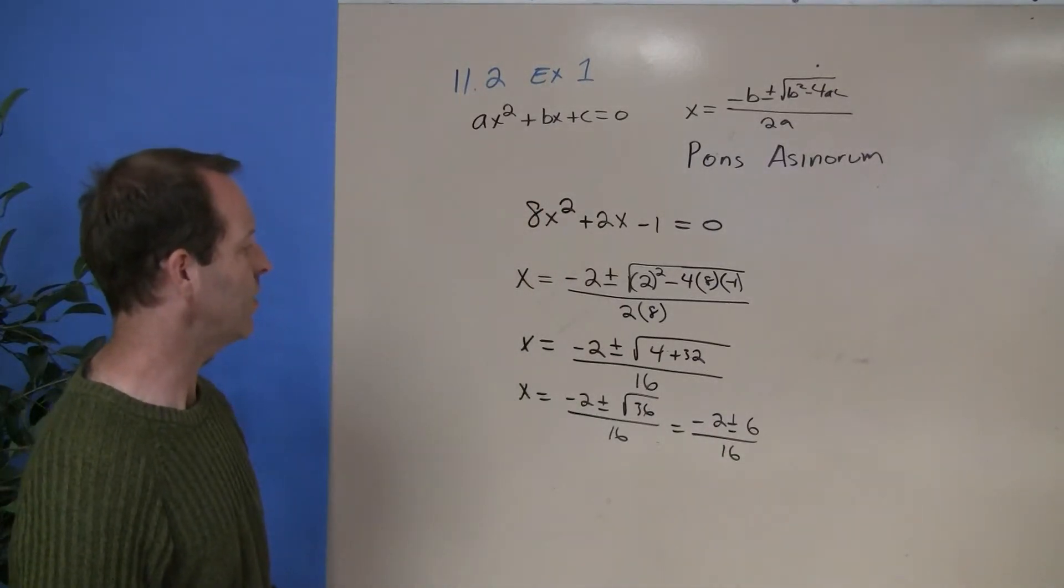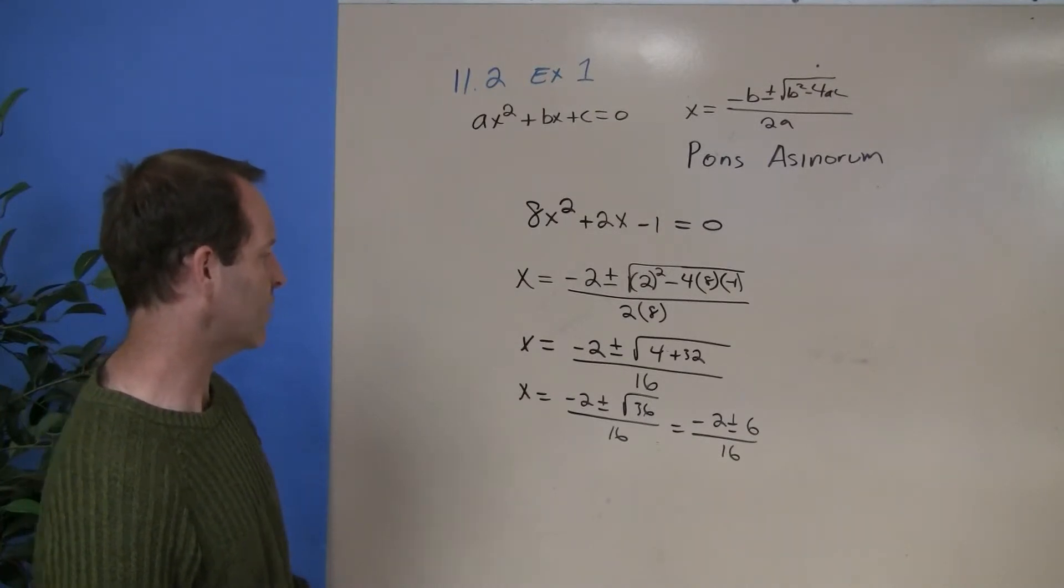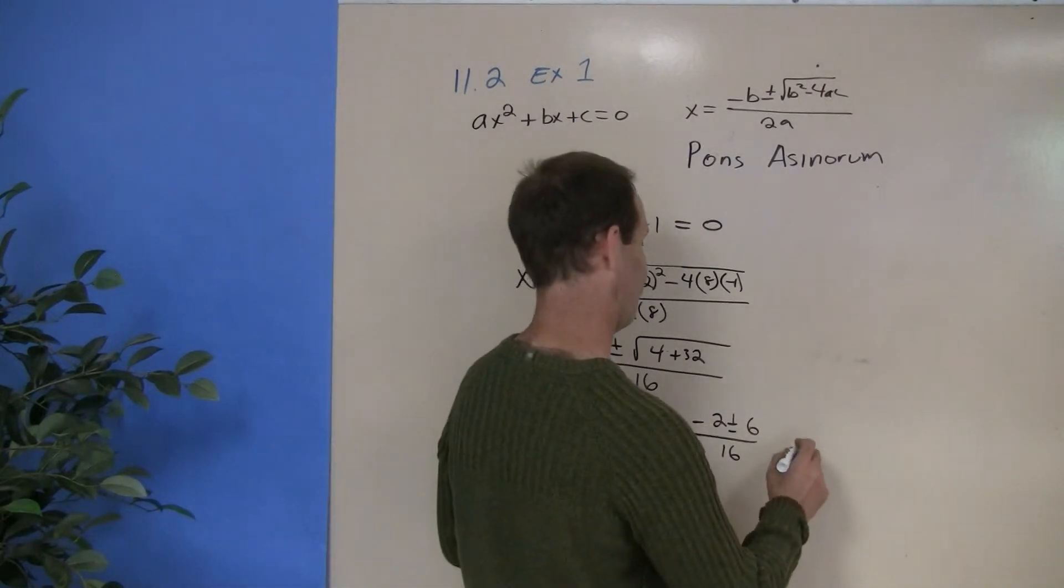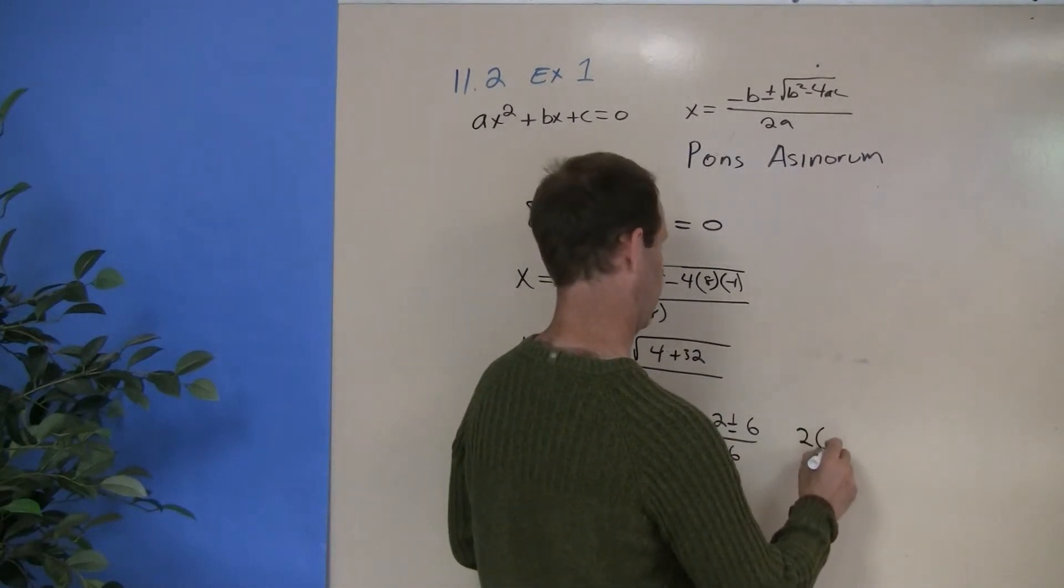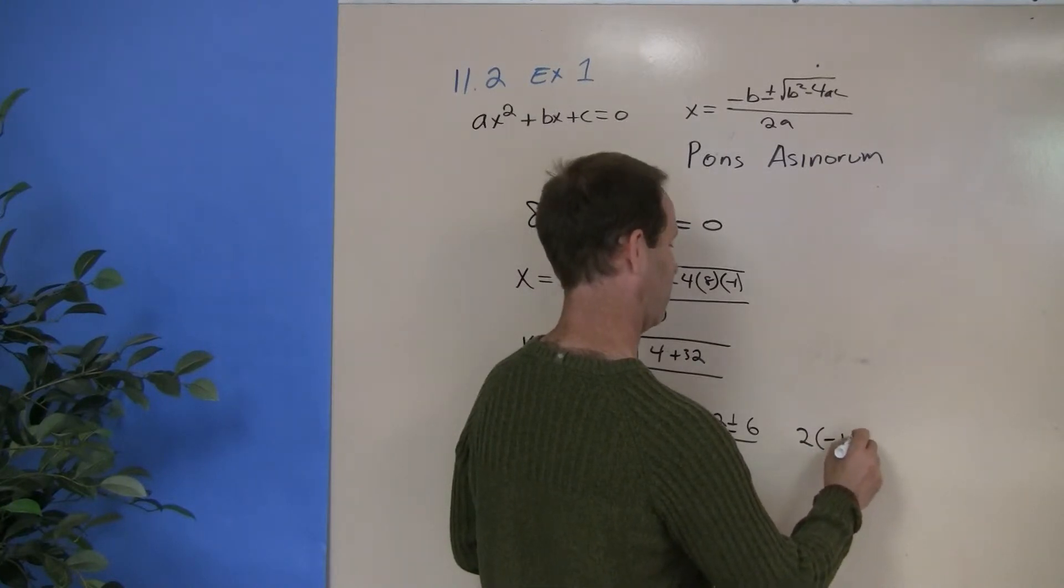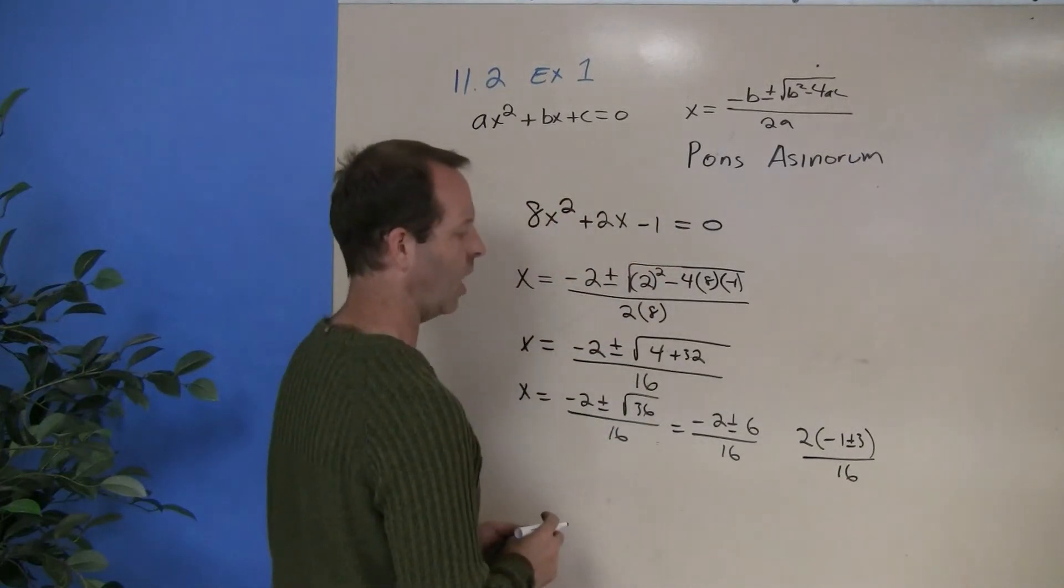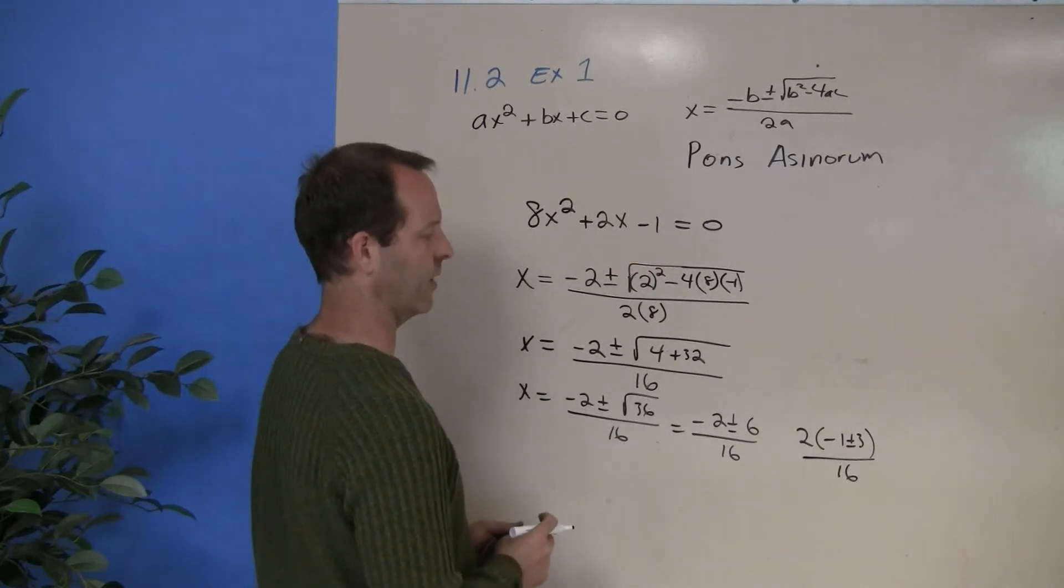And my two answers that I'm starting to shape up here, and maybe the best way to do that is I might factor out a 2 first. So I have a 2 times a negative 1, plus or minus 3, all over 16.